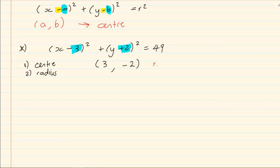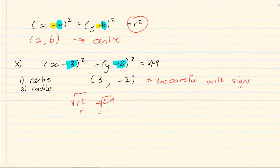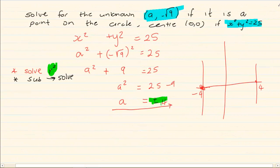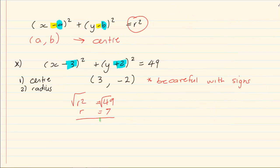Remember to be careful with the signs. For the radius, the formula says r squared equals 49. If I root both sides, r equals 7. I am not putting plus and minus 7 — whereas previously when solving squares you would put plus and minus — because r is always positive. r is radius, which is a length, which is always positive.